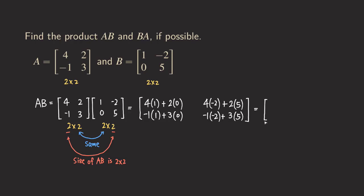Simplifying is straightforward. 4 times 1 plus 0 gives us 4. Then negative 8 plus 10 gives us positive 2. For the (2,1) entry: negative 1 plus 0 gives negative 1. For the last entry: 2 plus 15 gives 17. So the product AB is the matrix with entries 4, 2, negative 1, 17.